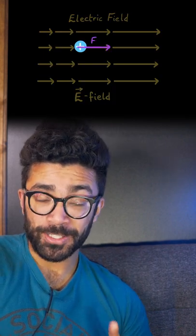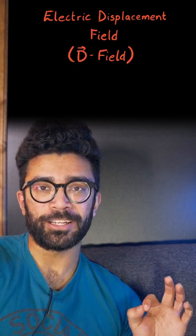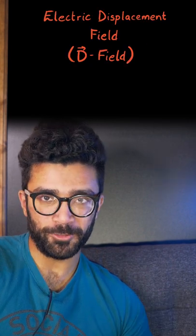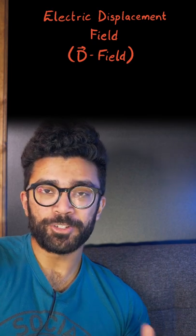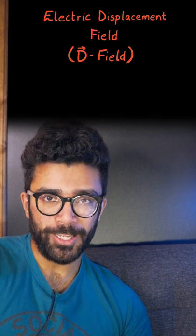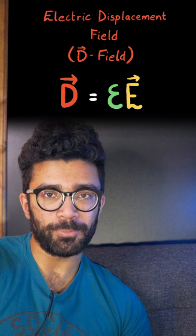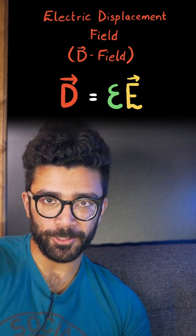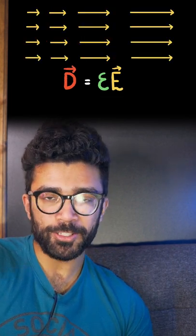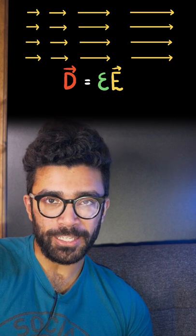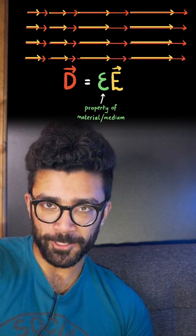But did you know that there's another kind of electric field called the electric displacement field, or D-field for short? It's related to the original E-field by D is equal to epsilon multiplied by the E-field. In other words, if at every point in space we multiply the value of the E-field by epsilon, then we get the D-field.